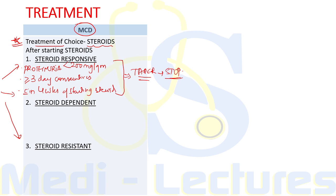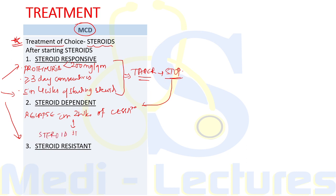The second scenario is steroid-dependent nephrotic syndrome: if a patient is steroid responsive but after stopping the steroid there is relapse within two weeks of cessation, this is known as steroid-dependent nephrotic syndrome. The treatment is a steroid-sparing agent, which is cyclophosphamide, used for six months.